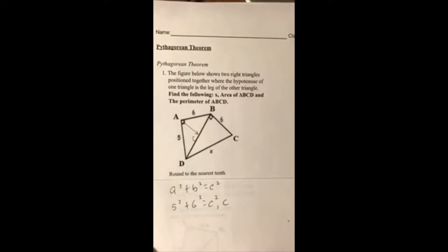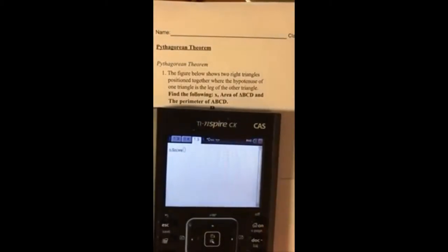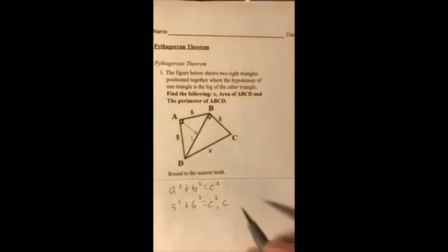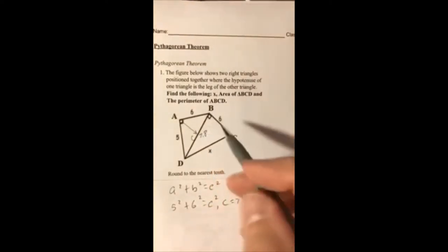I'm going to go to menu 3-1 and I'm going to put in 5² + 6² = c², c. And that's going to give us 7.8. So this is 7.8.